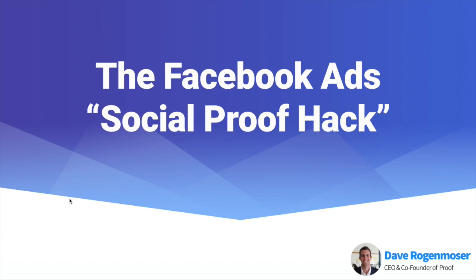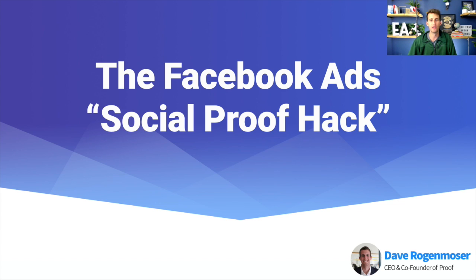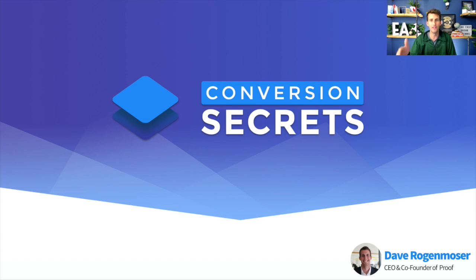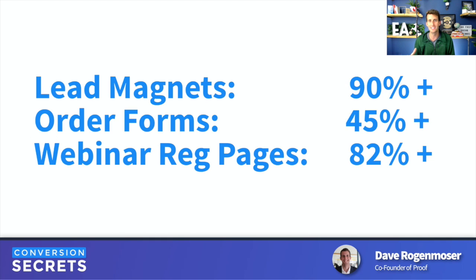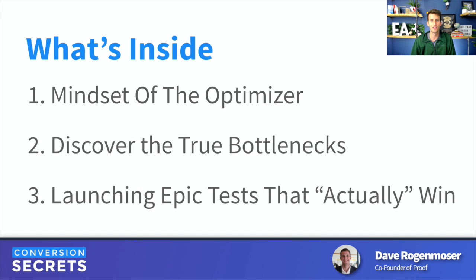I ripped this right out of our Conversion Secrets course, which sells for $500, but right now because you're watching this video you can get it absolutely free. Inside Conversion Secrets I'm going to go over methodical testing, how to get your funnels going, proper A/B testing — just the nuts and bolts that every marketer should be doing. Our lead magnets convert over 90%, our order forms convert over 45%, and our webinar registration pages often convert over 82%.